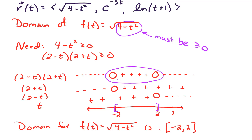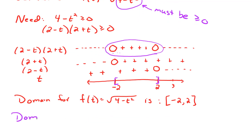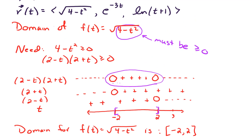We can take the square root of zero, so that endpoint is fine. Now let's move on to our next component, e to the negative 3t. Exponential functions with a negative exponent represent exponential decay, but the domain is all real numbers. So that one was pretty easy. Now for the last piece, the natural log of t plus 1, let's analyze that.